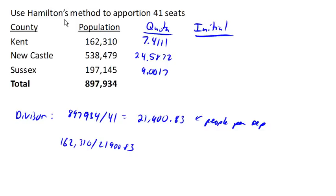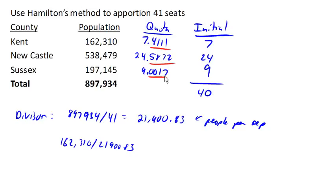So Kent becomes 7, Newcastle becomes 24, and Sussex becomes 9. If we add those up — 24 plus 7 plus 9 — they only add up to 40, which means we have an extra seat that doesn't have a home yet. Hamilton's method says give that extra seat to the state whose decimal part of the quota was the largest. Looking at each decimal part, the .5872 is the largest.